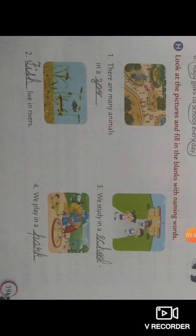Number one is: there are many animals in a zoo. This is the picture of a zoo. Number two: fish live in the rivers. Here is the picture of fish. You will write down fish.